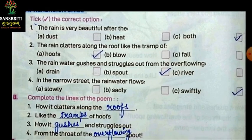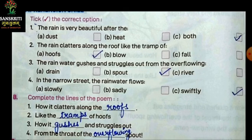B part mein kya diya hua hai? Complete the lines of the poem. Ismein humko poem ki lines complete karni hai. First: how it clatters along the — roofs. Next: like the dash of hoofs — ismein kya fill karenge? Tramps. Like the tramps of hoofs. Next: how it dash and struggles out — ismein hum fill karenge gushes. Next: from the throat of the dash spout — ismein hum kya fill karenge? Overflowing. From the throat of the overflowing spout.